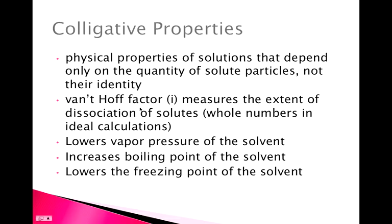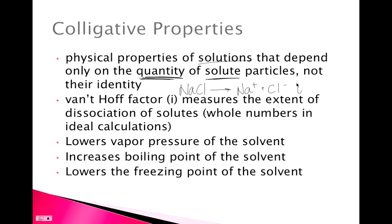Colligative properties: any property of a solution that depends only on the quantity of solute particles — not what they actually are, just how many there are. How much you have is measured by the van't Hoff factor, symbolized with i. For example, sodium chloride dissociates into sodium ions and chloride ions in water, so NaCl has a van't Hoff factor of 2.